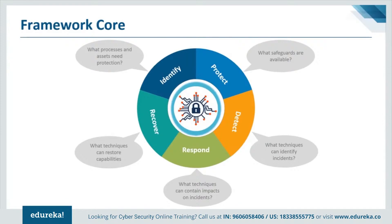These five functions are not only applicable to cybersecurity risk management but also to risk management as a whole. The core asks an organization to identify what processes and assets need to be protected, then find what protection is available, then find what techniques can identify threats and contain the impact of an incident, and finally define what techniques can restore the capabilities of the organization before the attack.